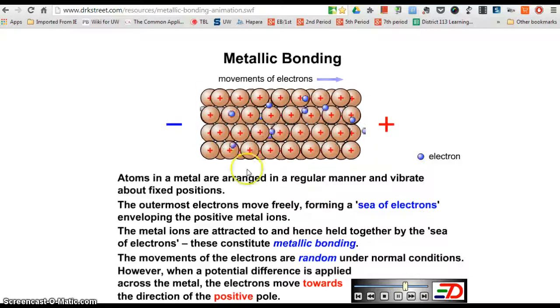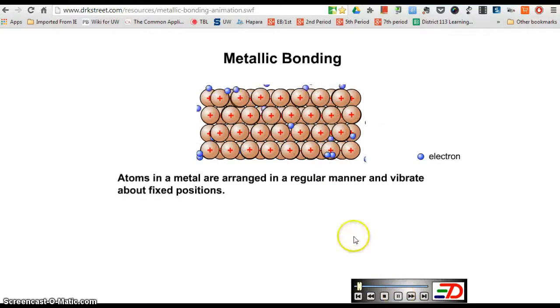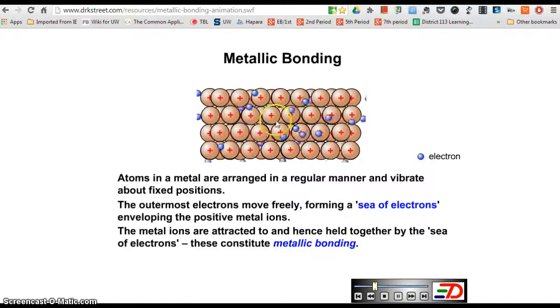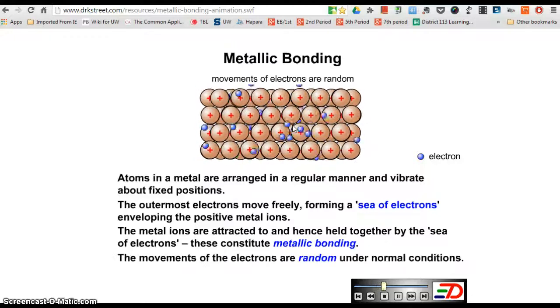But if I apply a potential difference across them, I can get the electrons to go in one direction, and that is what an electric current is. So metallic bonding has free-moving electrons going around the nuclei. They are not held tightly, so there are a sea of electrons moving around. And the nuclei being attracted to these electrons is the bond.